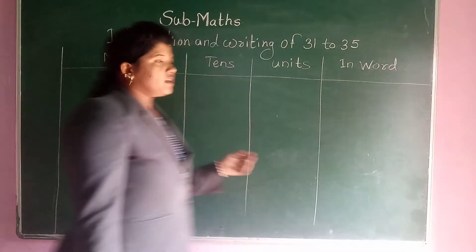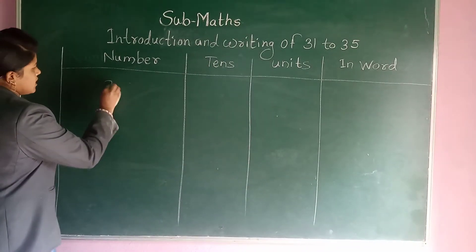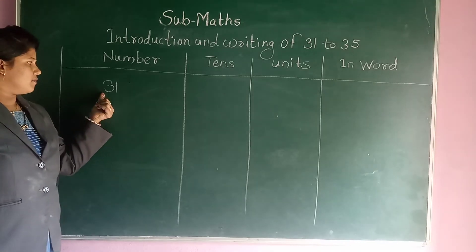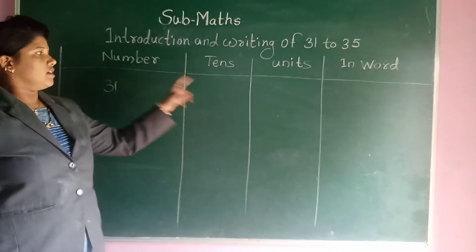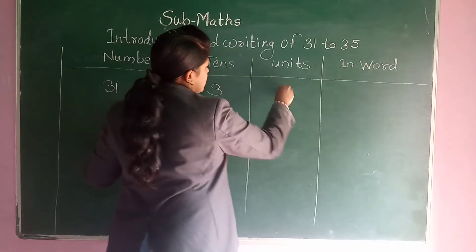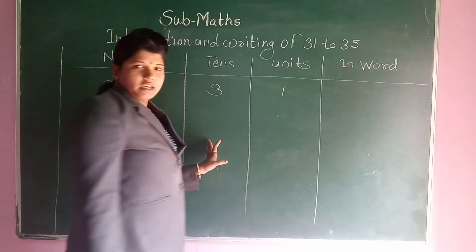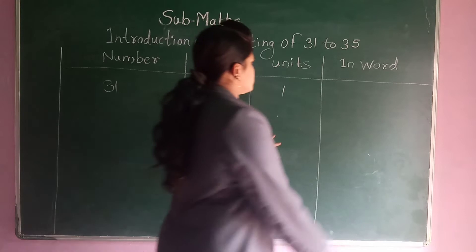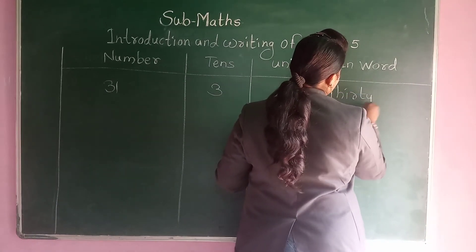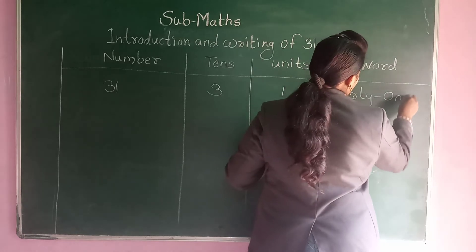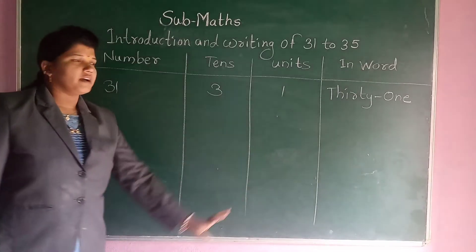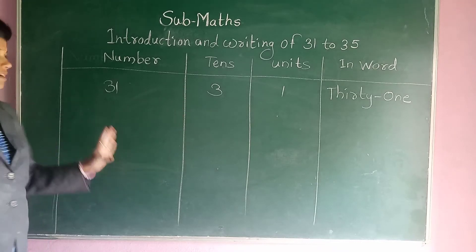Okay, so first write here: 31. This type — it is a figure. 31: tens is 3 and units is 1. And how to write in words: t-h-i-r-t-y, 30, and o-n-e — thirty-one. It is in word.